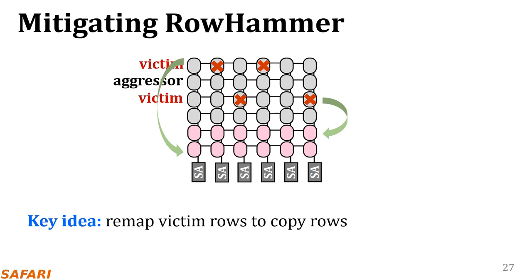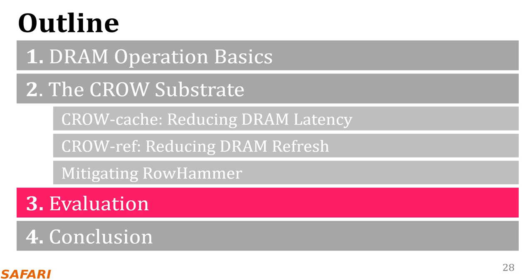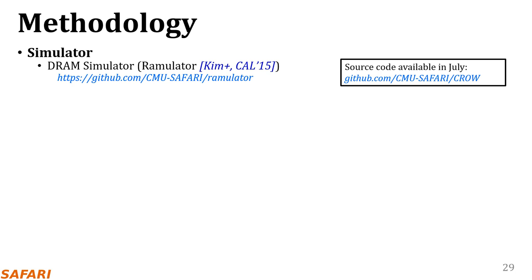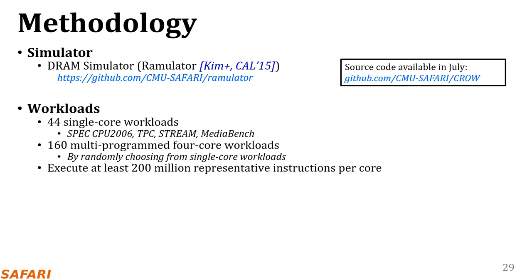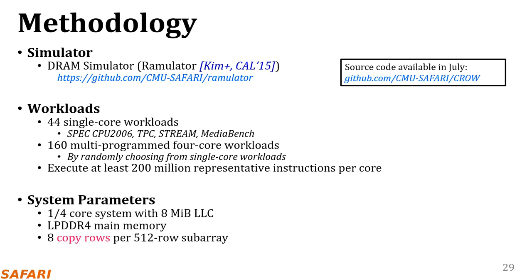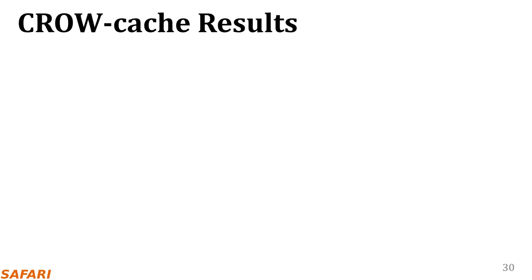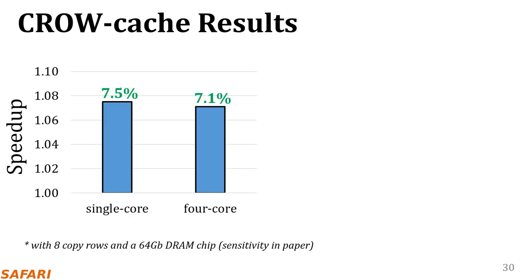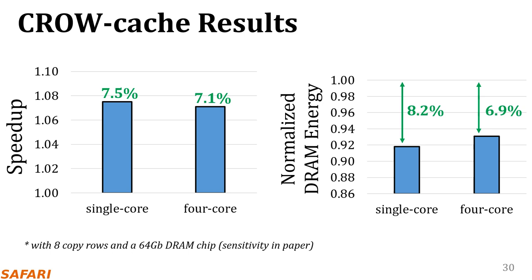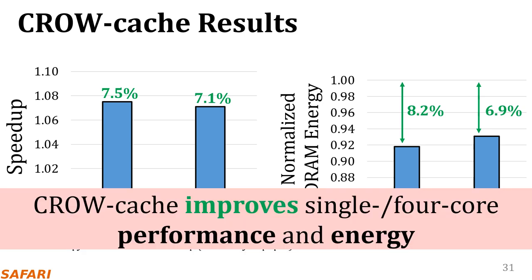We will leave the evaluation of this mechanism for future work. To evaluate the CROW mechanisms, we used Ramulator, which is a highly accurate DRAM simulation tool. The source code of our simulation infrastructure will be available in July. We analyzed workloads from four benchmark suites, including SPEC CPU 2006. We implement CROW with eight copyrows per subarray by default. CROW cache provides 7% speedup for both single-core and four-core workloads, which is very close to an ideal hypothetical mechanism with CROW cache that has 100% hit rate. CROW cache also saves DRAM energy, mainly because of reduction in execution time.